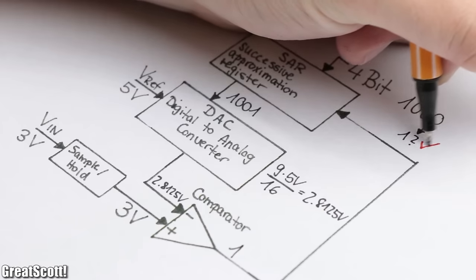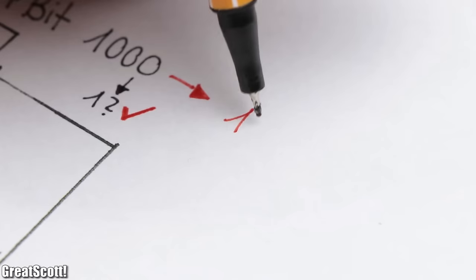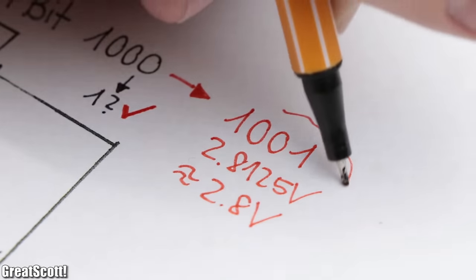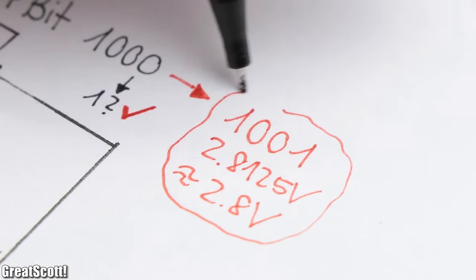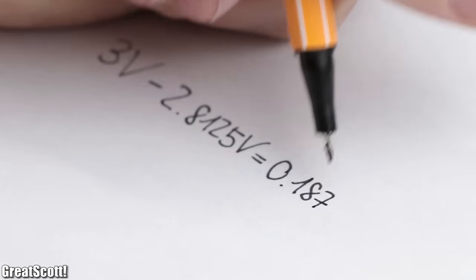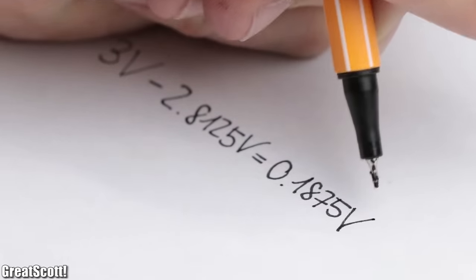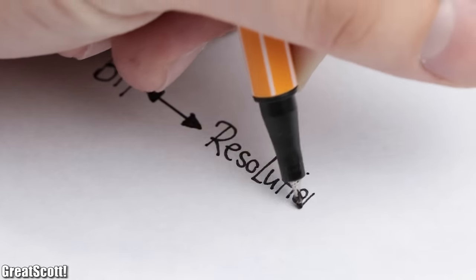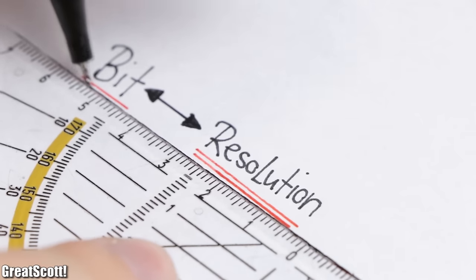This cycle repeats until all 4 bits are processed and we get a result of 1001, or around 2.8 volts as a decimal value. Only problem is that there still exists a noticeable voltage difference to the sample value. The reason for that are the bits, or in other words, the resolution—the second important specification.